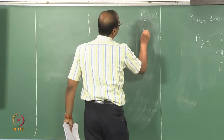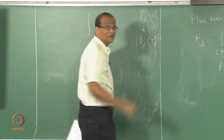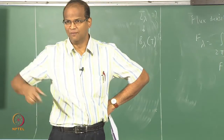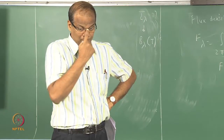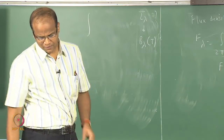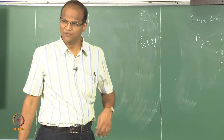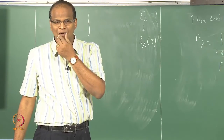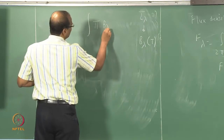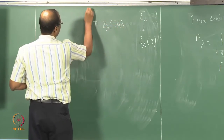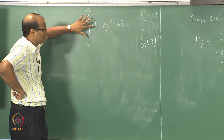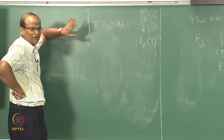For a black body, instead of i_lambda, we call it B_lambda, which is a function of temperature. The spectral radiance or monochromatic radiation intensity is a function of lambda; for each temperature it will have a distribution. The symbol i_lambda is replaced by B_lambda because i_lambda can be for reflection, transmission, or absorption, but B is specifically for emission. To obtain emissive power, we multiply B_lambda by pi, which accounts for the solid angle, and integrate from 0 to infinity over lambda.